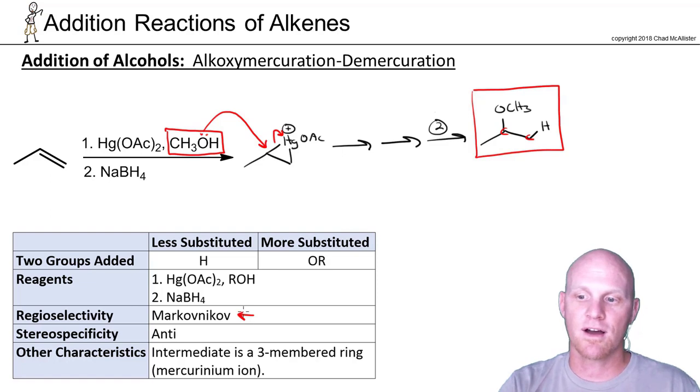It's Markovnikov. If we do form two chiral centers in some other example, it is an anti addition, so the OCH3 and the H would end up on opposite sides or at least they'd add to opposite faces of the molecule. But no carbocation intermediate, so no rearrangements.